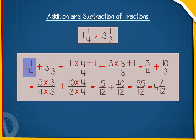1 and 1 by 4 plus 3 and 1 by 3 equal to 1 into 4 plus 1 by 4 plus 3 into 3 plus 1 by 3 is equal to 5 by 4 plus 10 by 3 equal to